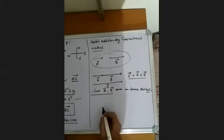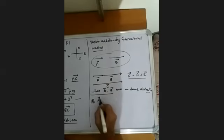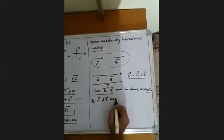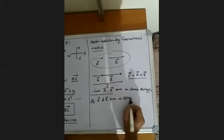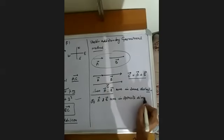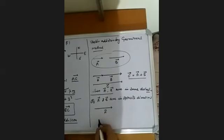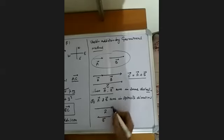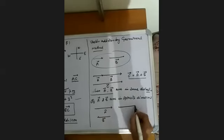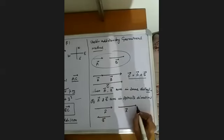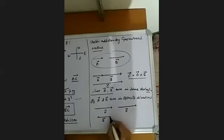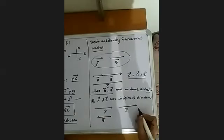Now A and B are in the opposite direction. So this is vector A and B is in the opposite direction of vector A — this is vector B. So we have to add these two vectors. First we draw vector A; the length is equal to this vector. Then we draw vector B, and the tail of B and this point are joined.